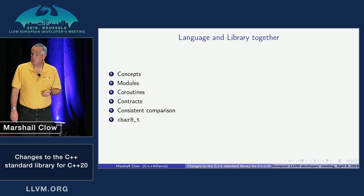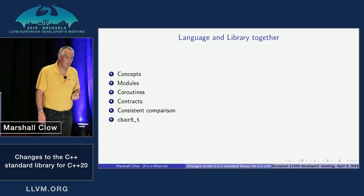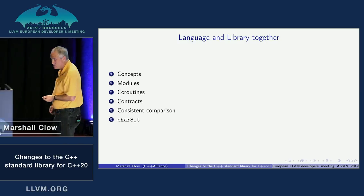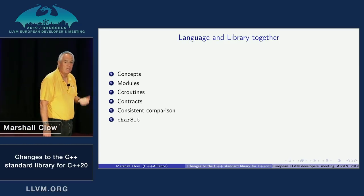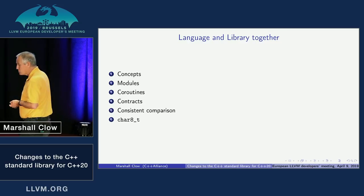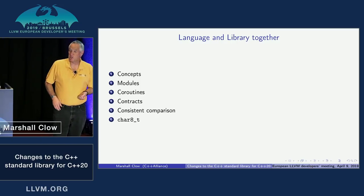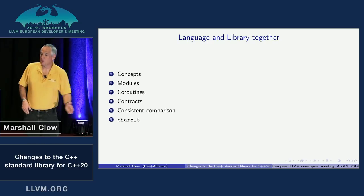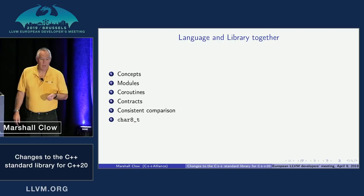Contracts — there was a student paper here about adding contract support to Clang. Contract-based programming, similar to Eiffel, has been very popular for a long time and it's coming to C++. We're going to have preconditions, postconditions, and assertions that you can turn on and off at build time. Some checks will be easy and some very hard, so you have fine-grained control — enable cheap checks or default checks, but not the expensive ones.